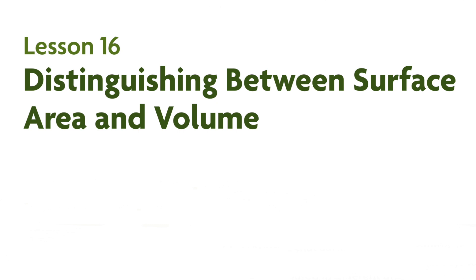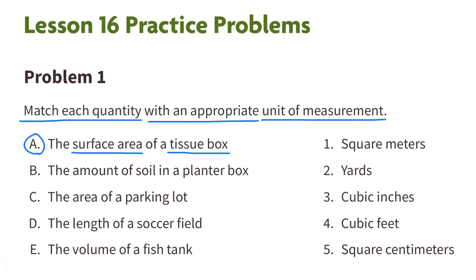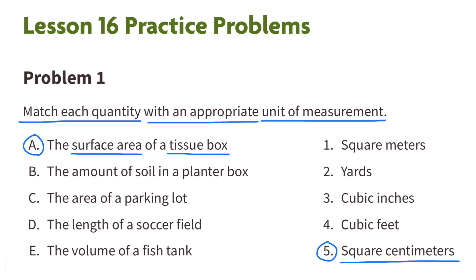6th grade unit 1, lesson 16: distinguishing between surface area and volume. Number one: match each quantity with an appropriate unit of measurement. A: the surface area of a tissue box. Since they're asking for surface area and not volume or length, I need to look for something that's squared. I would pick five square centimeters rather than square meters because a tissue box isn't large enough to measure in square meters.